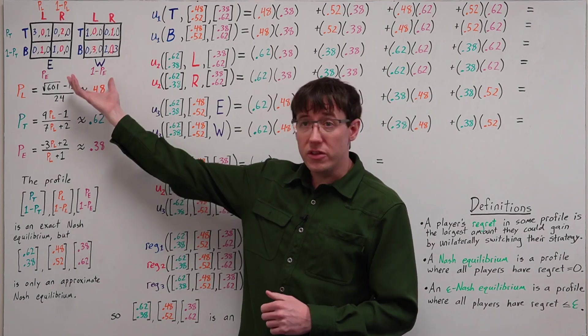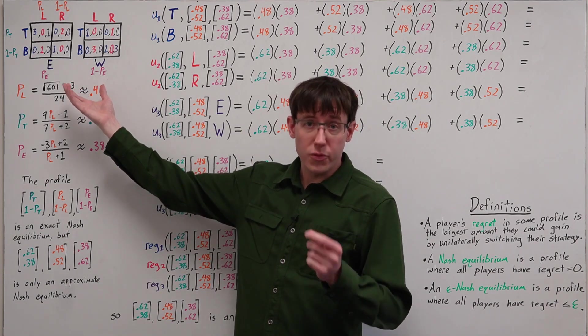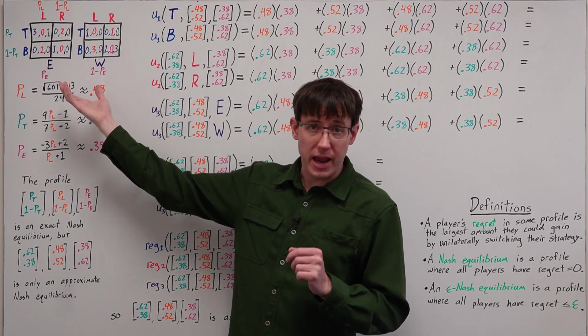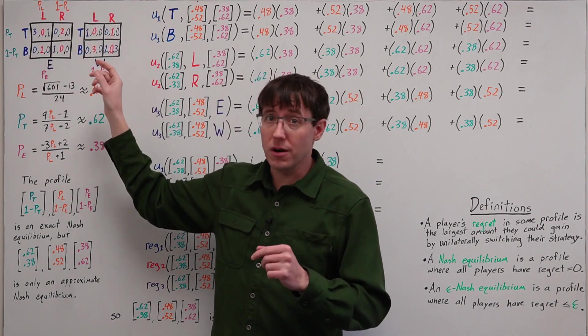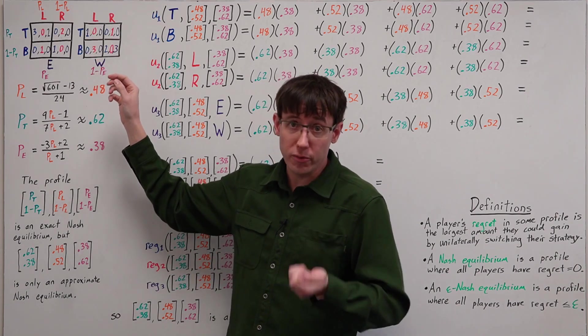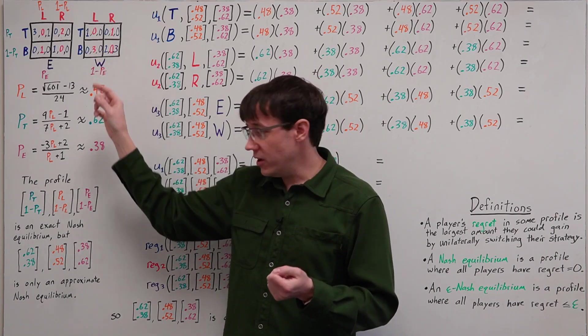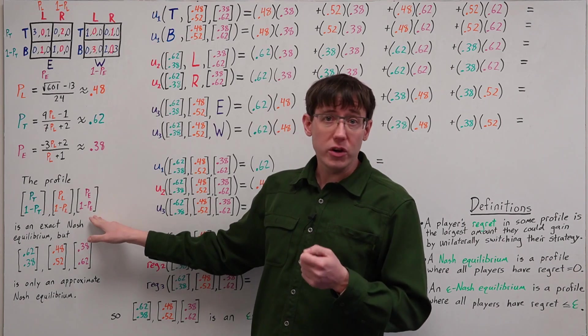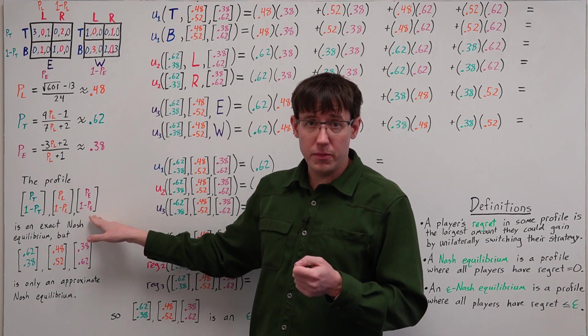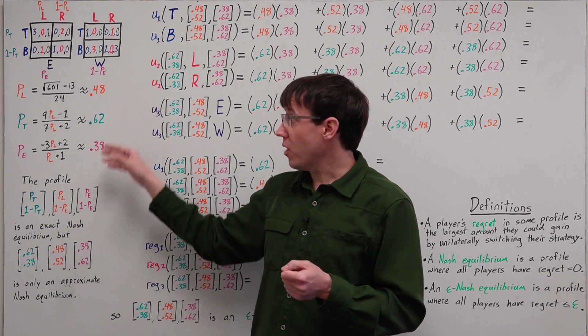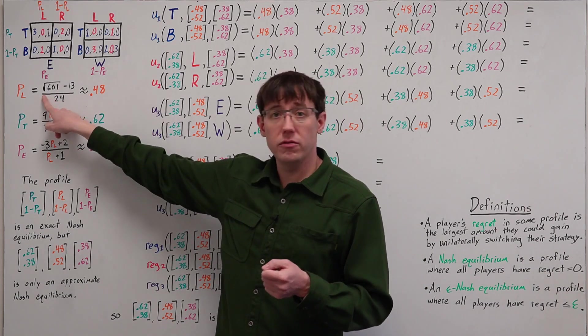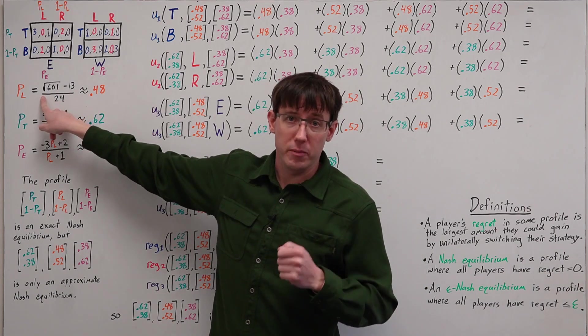And that brings us to this example of a three-player, two-action game, in which all of the payoffs are 0, 1, 2, or 3. And yet, the only Nash equilibrium of this game is a mixed strategy profile where the probabilities involve the square root of a prime number.